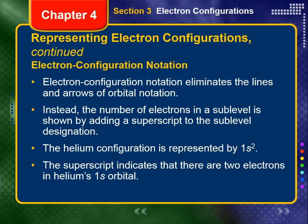Electron configuration notation eliminates the lines and arrows of orbital notation. Instead, the number of electrons in a sublevel is shown by adding a superscript to the sublevel designation. The hydrogen configuration is represented by 1s¹. The superscript indicates that one electron is present in hydrogen's 1s orbital. The helium configuration is represented by 1s². Here, the superscript indicates that there are two electrons in helium's 1s orbital.